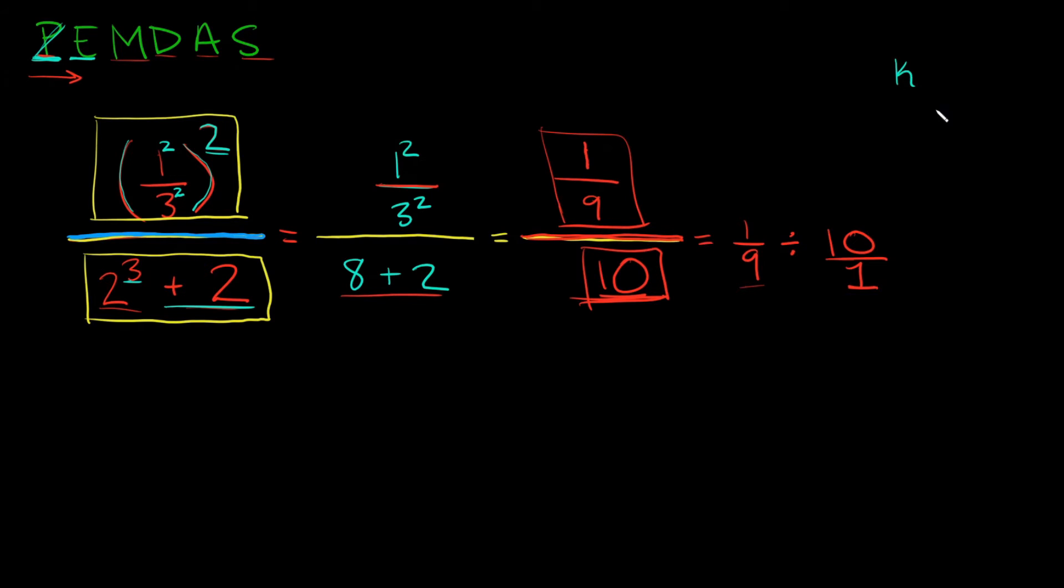Well a useful little acronym to remember is KFC. And this stands for keep flip change. KFC. So how does that apply to our division problem? So we're going to write it out. K means keep this first fraction as it is. So when we're writing this out one ninth is going to stay as one ninth.